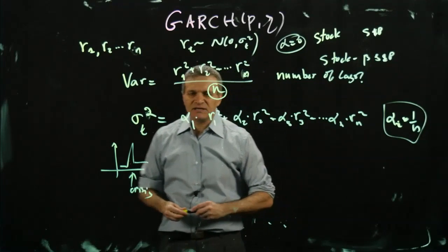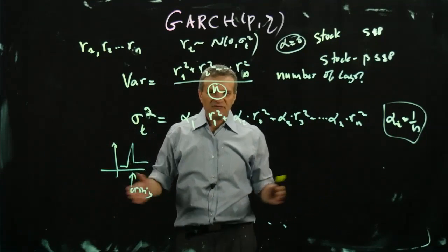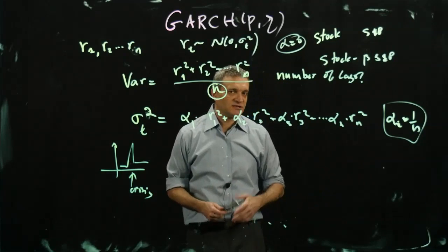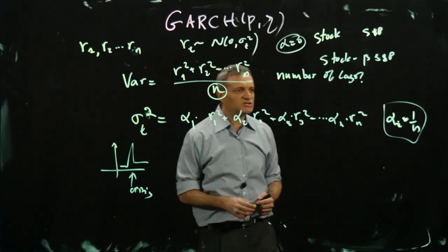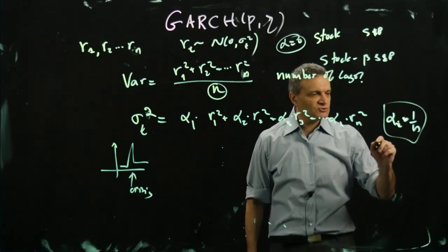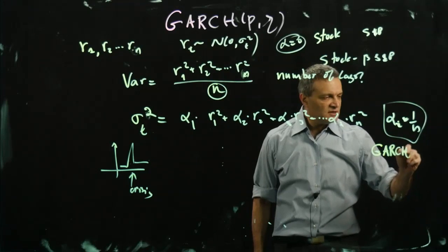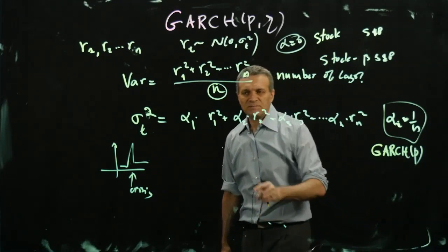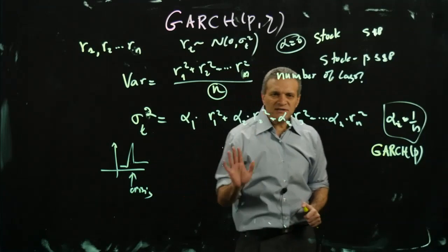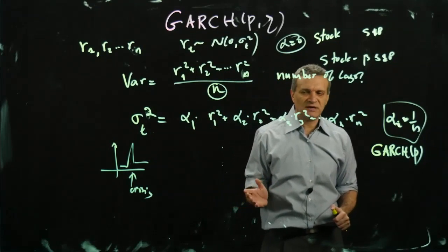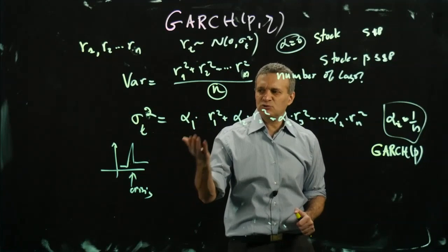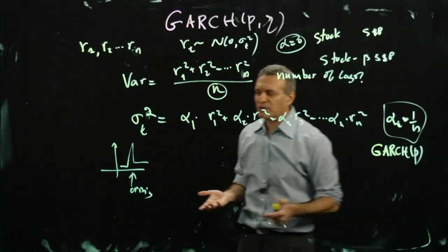For example, if you take n = 3600 (roughly 10 years of daily data) versus n = 30 (just 30 days), you get very different volatility estimates. So in a GARCH model, p tells you how many lagged returns to include. The usual approach assigns equal weight 1/n to each.